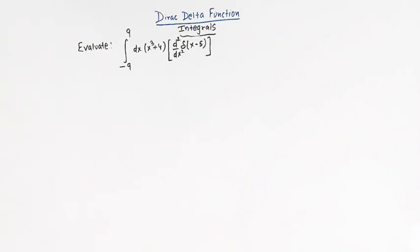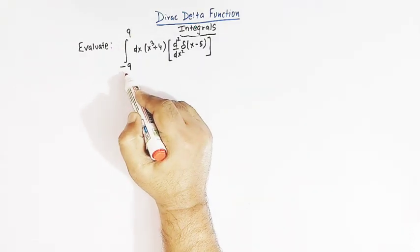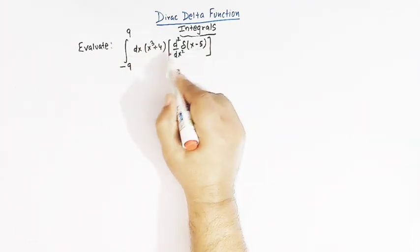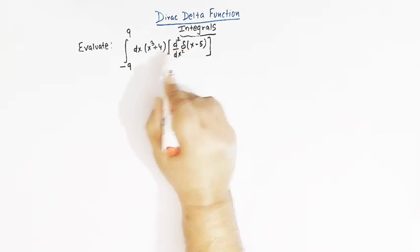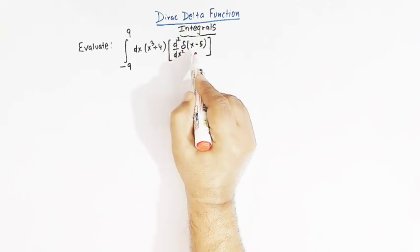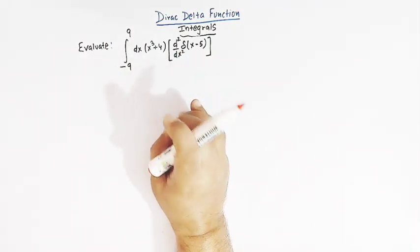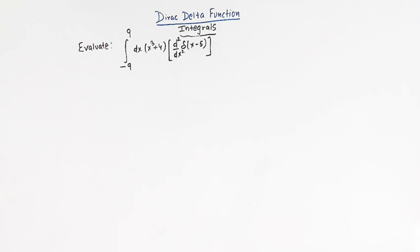Hello viewers. In today's class we are going to discuss one important integral involving the famous Dirac delta function. We have to evaluate the integral from minus 9 to 9 of x cubed plus 4 multiplied by the second derivative, d²/dx², of the Dirac delta function delta of x minus 5. In this lecture we'll see how, by making use of the properties of the Dirac delta function, we can evaluate this integral.